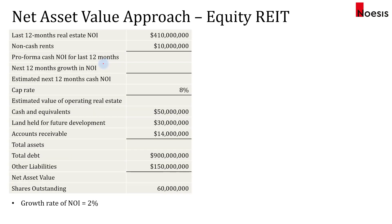We'll look at this example for equity REITs. We have the details for the last 12 months: real estate NOI, non-cash rents, the cap rate, cash and equivalents, land held for future development, accounts receivable, total debt, other liabilities, and shares outstanding. The growth rate of NOI is assumed to be 2%. We will compute the net asset value per share for this equity REIT.